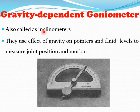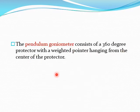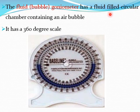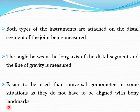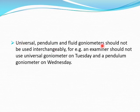The gravity-dependent goniometer, also known as the inclinometer, uses the effect of gravity on pointers and fluid levels to measure joint position and motion. The pendulum goniometer consists of a 360-degree protractor with a weighted pointer hanging from the center. The fluid goniometer has a fluid-filled circular chamber containing an air bubble, with a 360-degree scale. The instrument is attached on the distal segment of the joint being measured. It is easier to use than the universal goniometer in some situations as it does not need to be aligned with bony landmarks. Universal, pendulum, and fluid goniometers should not be used interchangeably.